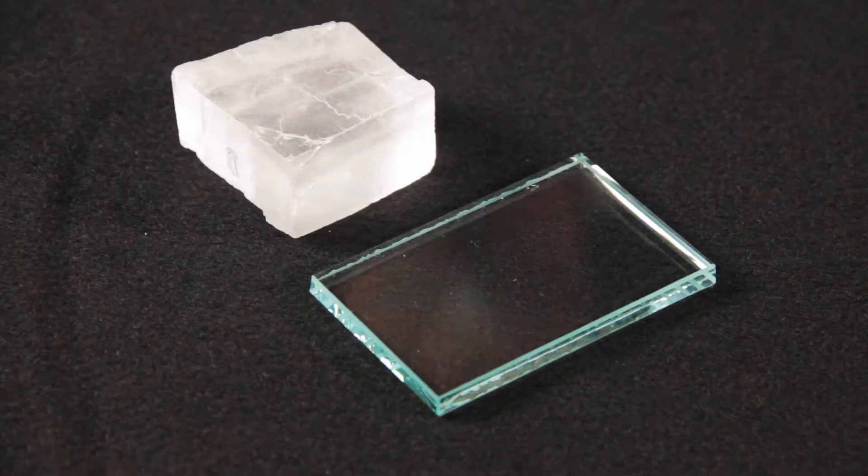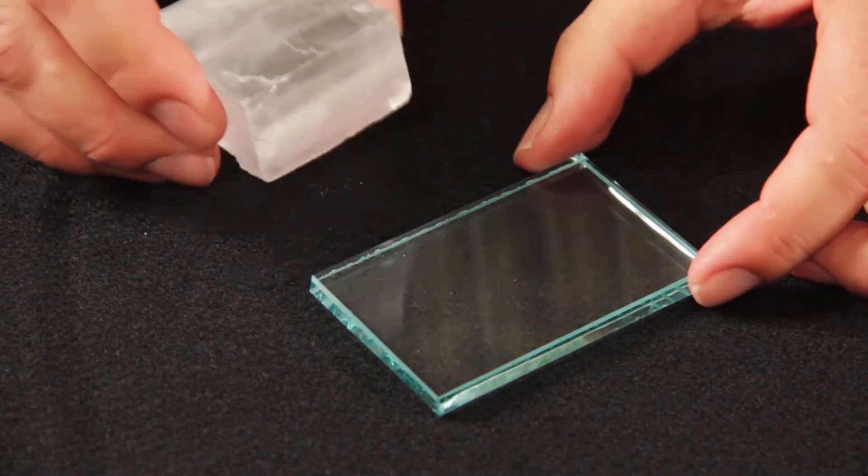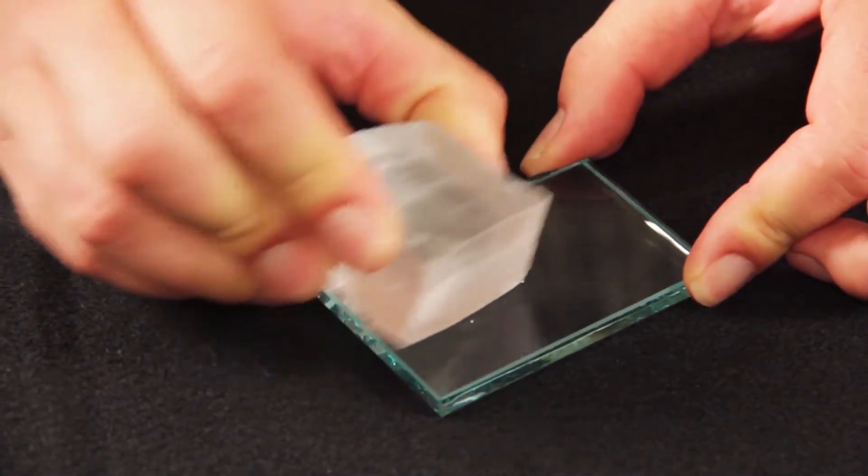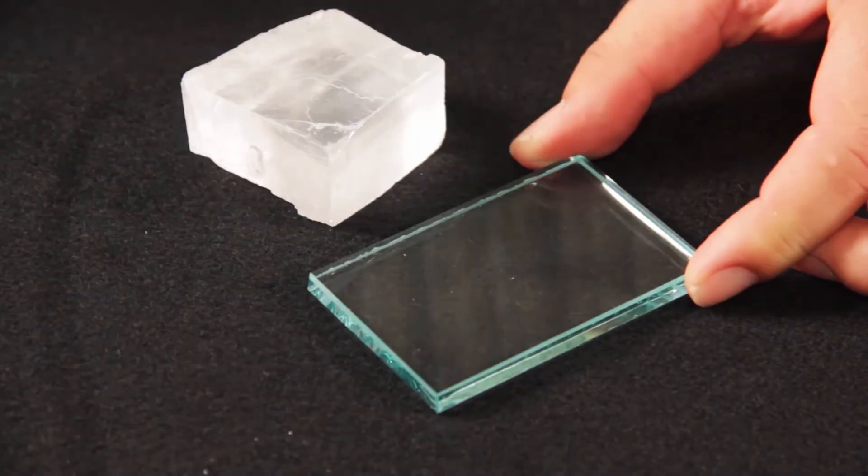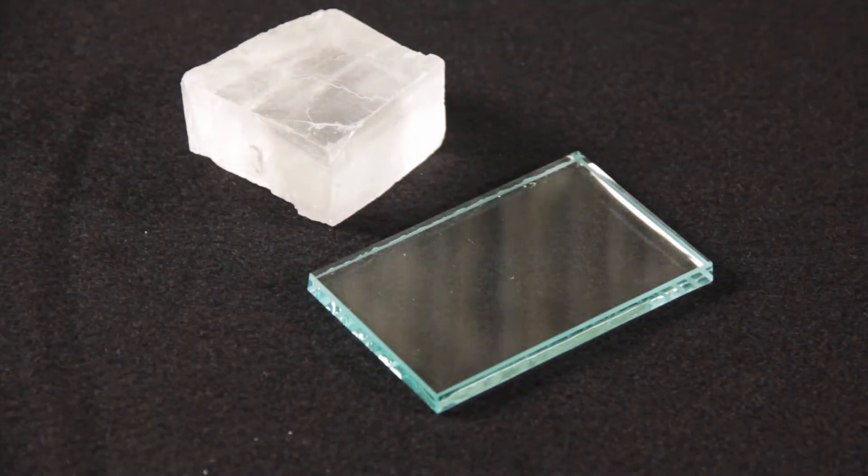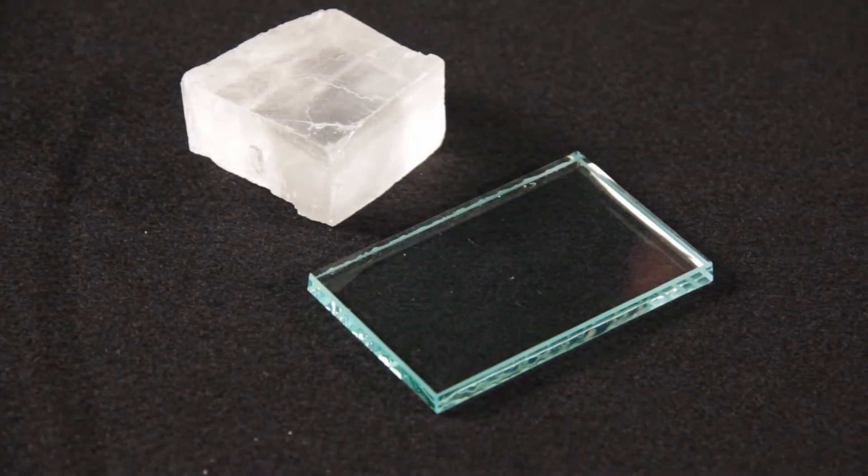When we do a test of the hardness of halite, we start with glass, which has a hardness of 5.5. When we attempt to scratch the glass with a crystal of halite, we see that it does not leave a scratch. This tells us that the hardness of halite is somewhere below 5.5.